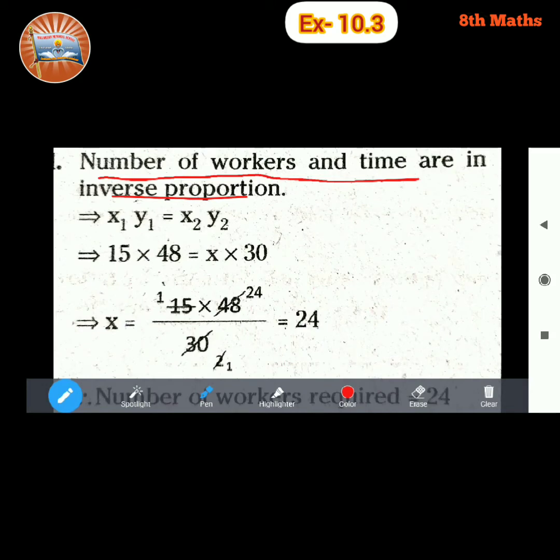So x1 is nothing but number of workers, 15, and y1 is 48 hours. x2, so he is considering x here. So if you want to take it as x2 also, no problem. So y2 is 30 hours.